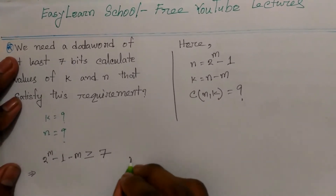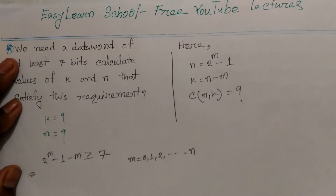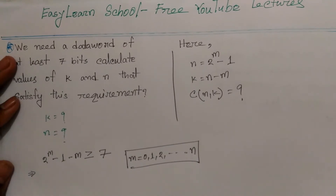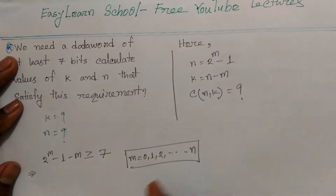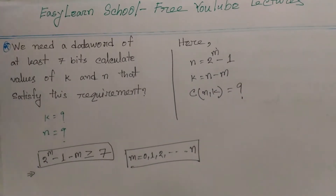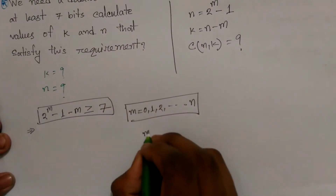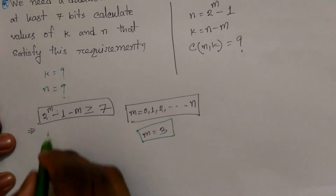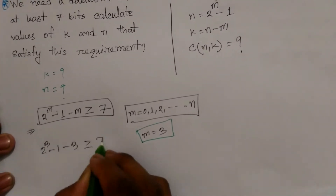This method is equal to m plus n. M1 is equal to n, so 2 to the power m is equal to 3. m1 is equal to 3, so 2 to the power m is equal to 3 minus 1 minus 3. m1 is equal to 7.